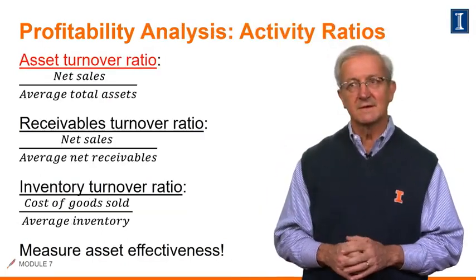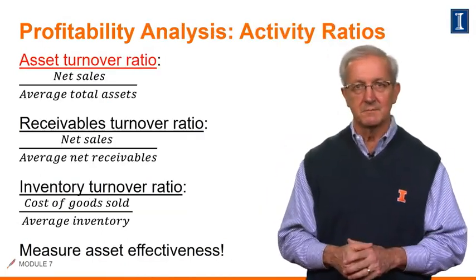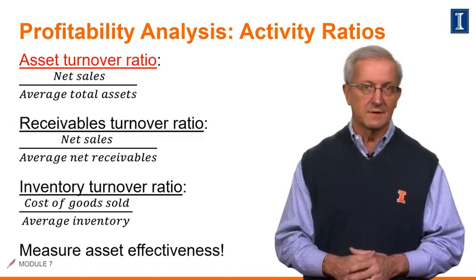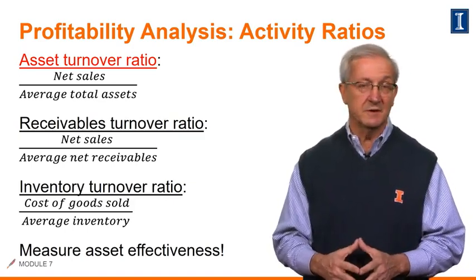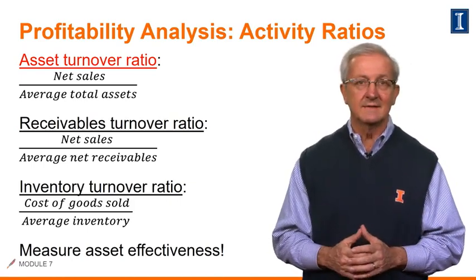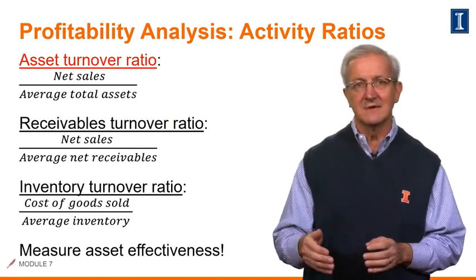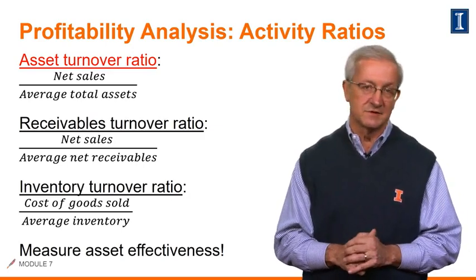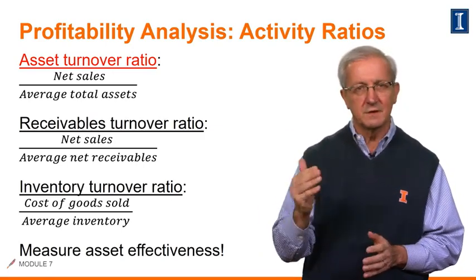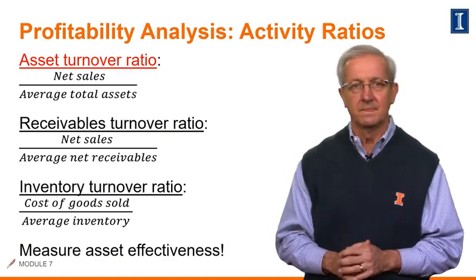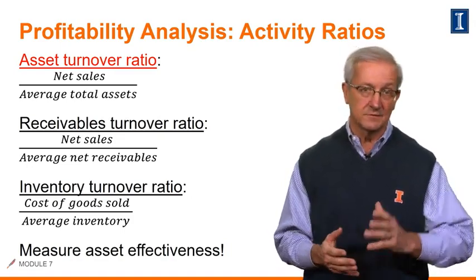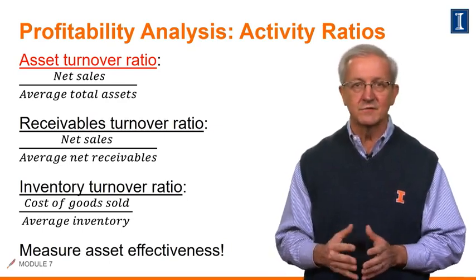Now, in this slide we discuss activity or turnover ratios that measure a company's effectiveness in managing its assets. The first one is the asset turnover ratio — a broad measure of asset efficiency that tells you how many sales dollars each one dollar of assets actually generates. It's highlighted in red as we'll use this ratio again later in the module. The asset turnover ratio is net sales divided by average total assets.